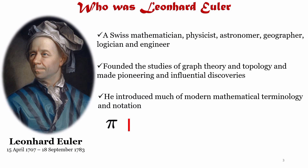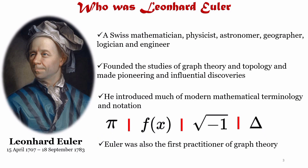Euler is particularly credited for popularizing the Greek letter pi to denote the ratio of circular circumference to its diameter, as well as first using the notation f(x) for functions, the value of the square root of minus 1 as i, the Greek letter capital sigma to express summations, and the Greek letter uppercase delta for finite differences. He gave the current definition of the constant e, the base of the natural logarithm known as Euler's number.